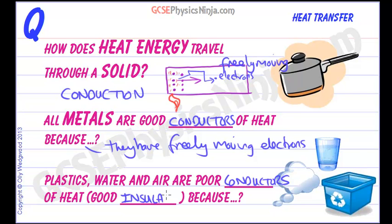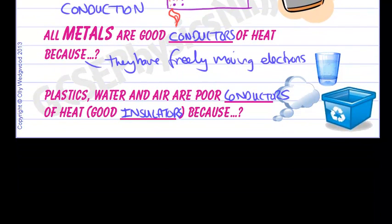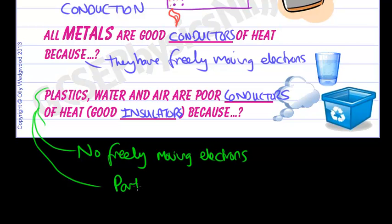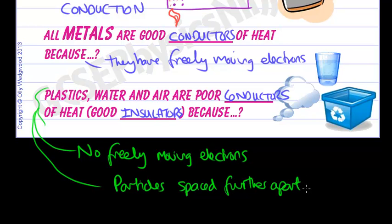So here are some key words for you to learn: conductors and insulators. Now they are poor conductors because, firstly, they do not have freely moving electrons — no freely moving electrons. But also their particles are spaced further apart, and that means it's harder for them to pass their vibrations on.